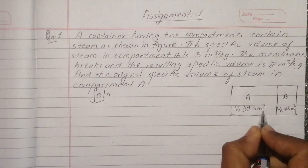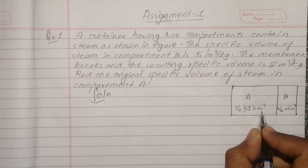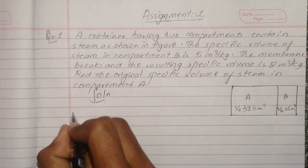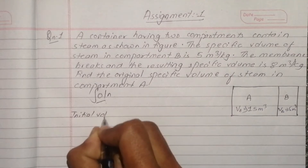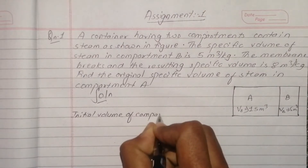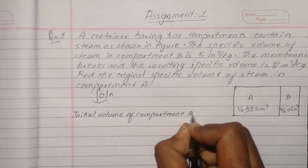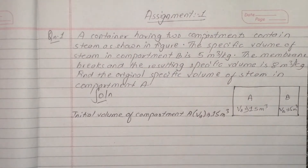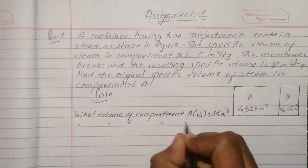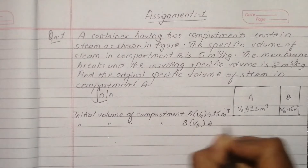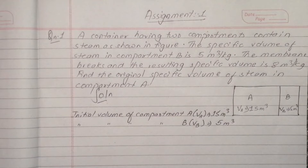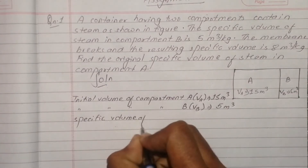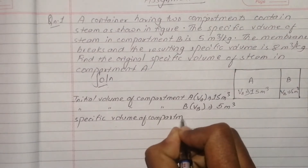The specific volume unit is meter cube per kg, and this specific volume unit is meter cube per kg. Initial volume of compartment A. The volume of compartment B is 5 meter cube. Initial volume and specific volume of compartment A.